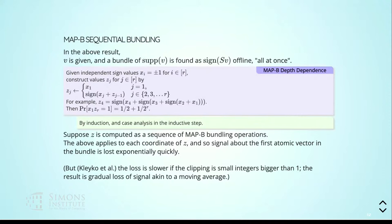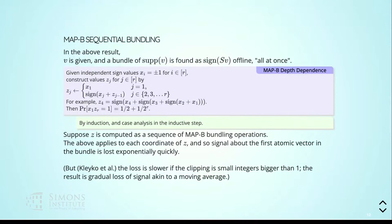One point: if instead of offline bundling you take a given atomic vector, bundle with it, take another, bundle, take another, and so on — this nested series of sign-add-take-sign — looking at m=1 in each case, the signal for whether the first atomic vector is in the bundle dies exponentially fast. The probability of detecting x1 is one half plus one over 2^r — a tiny bias. This relative weakness of MAP-B was already known to Dennis Kleyko and co-authors at the Redwood Institute.